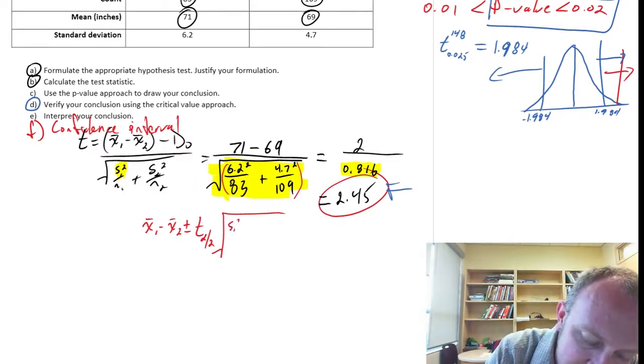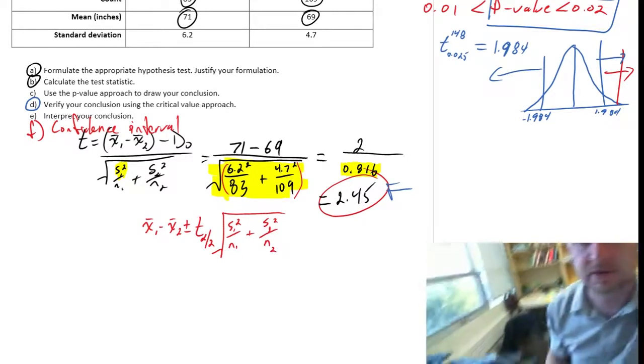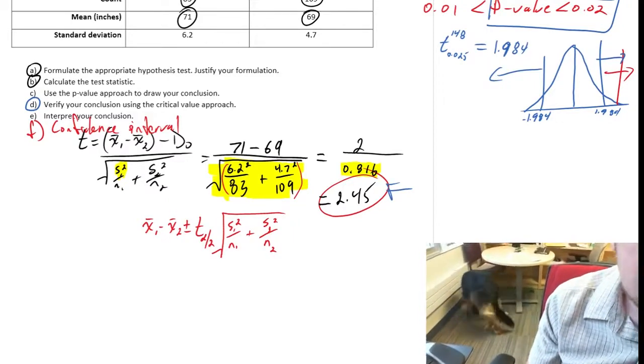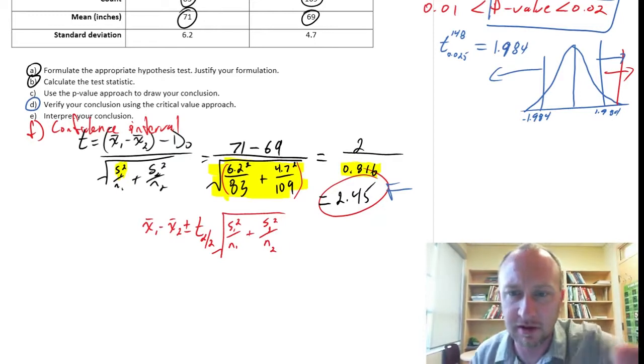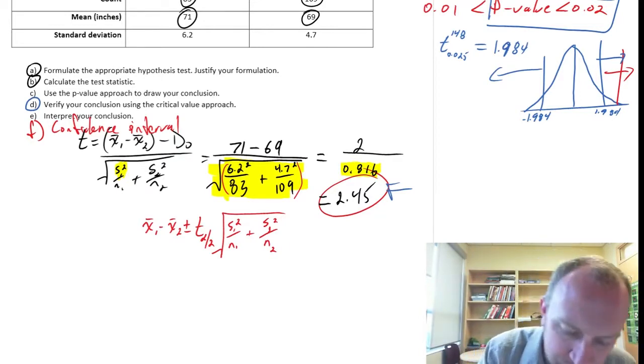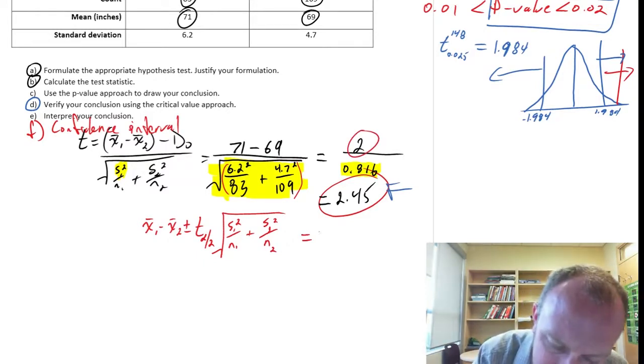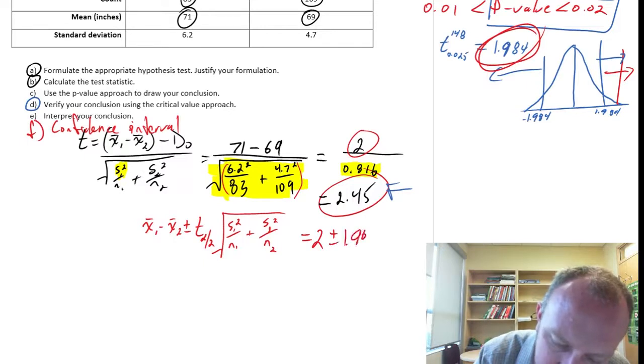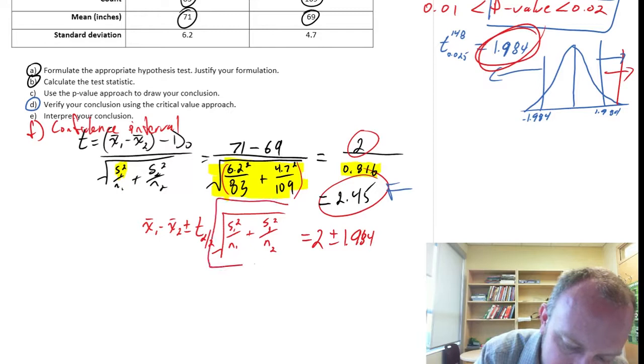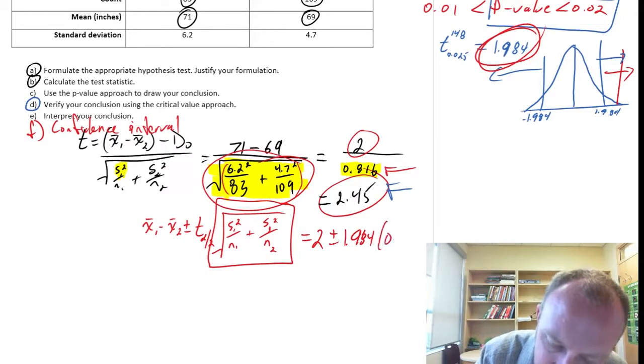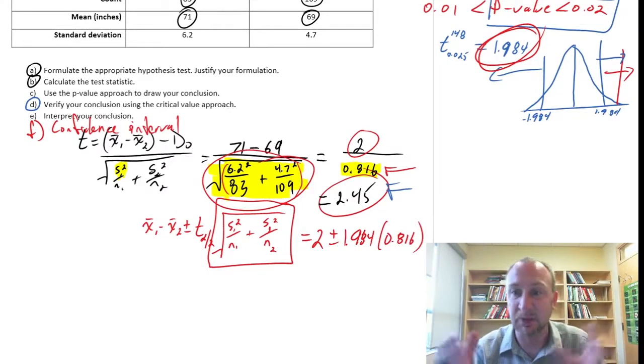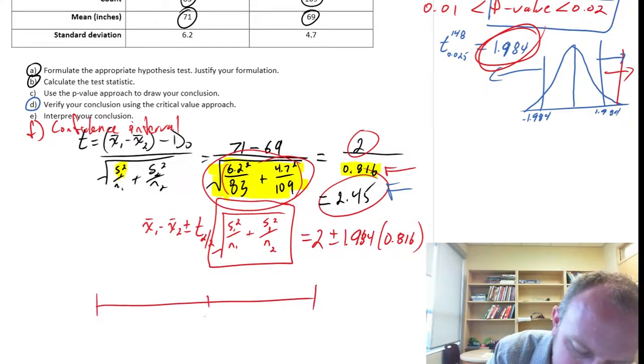Our formula for the interval estimate is very similar to what we've done before. It's that point estimate plus or minus this margin of error, which is the critical value times the standard error. This is the same calculation again. Can you guys hear that funny squeaking sound? She's got a new stuffy that's got a little squeaker in the belly, and I think she's trying to tear it open. So we can just plug in our numbers here. This point estimate we've already obtained is 2. This critical value we already have over here: plus or minus 1.984. And this standard error we've already calculated, it's right above here in the denominator: 0.816.